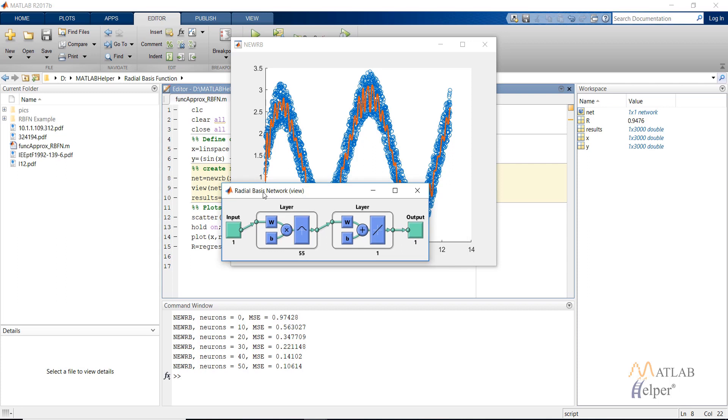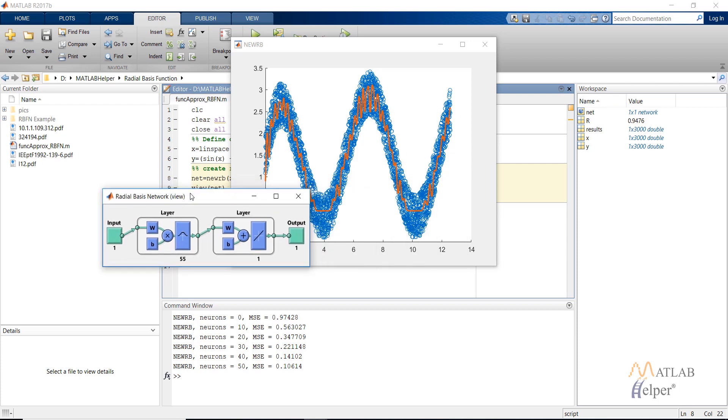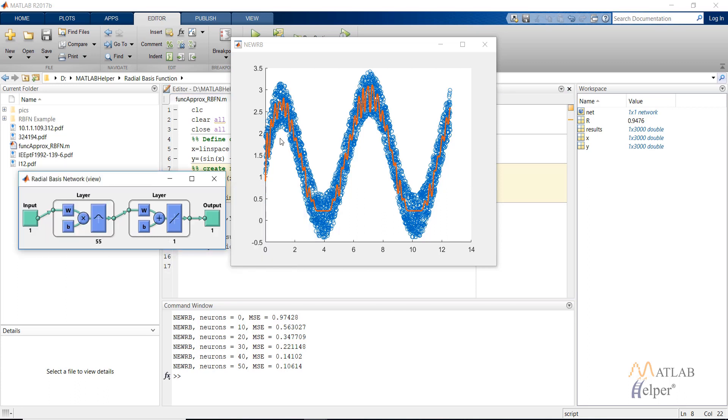As you can see, instead of last time in which we had seven neurons, in this case we have 55 neurons. Also the red line is not a good approximation. We can see that the red line has overfitted our data.